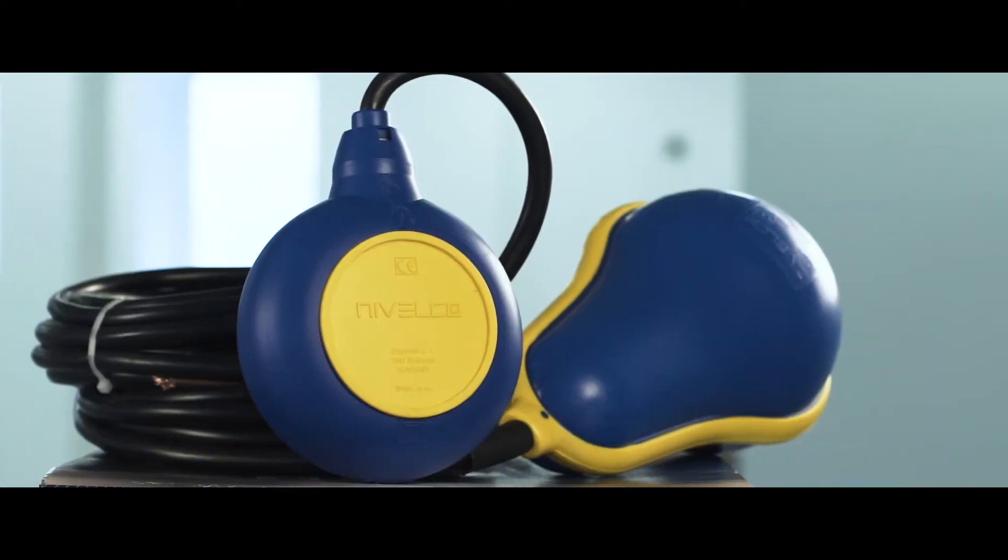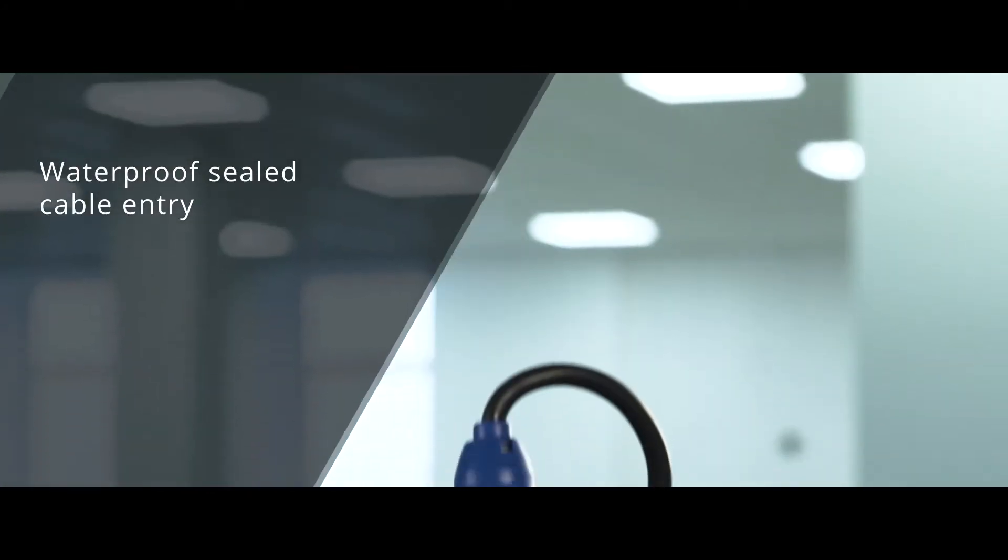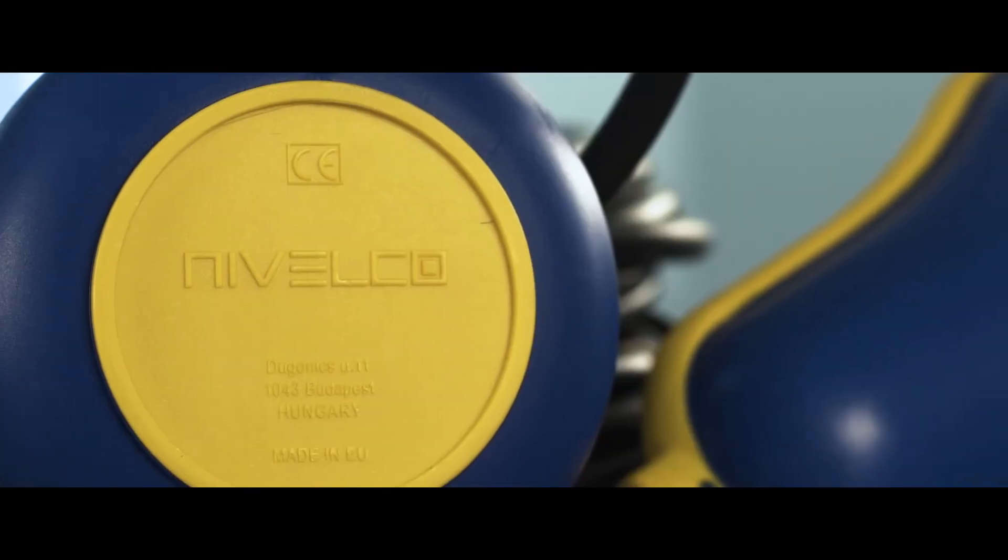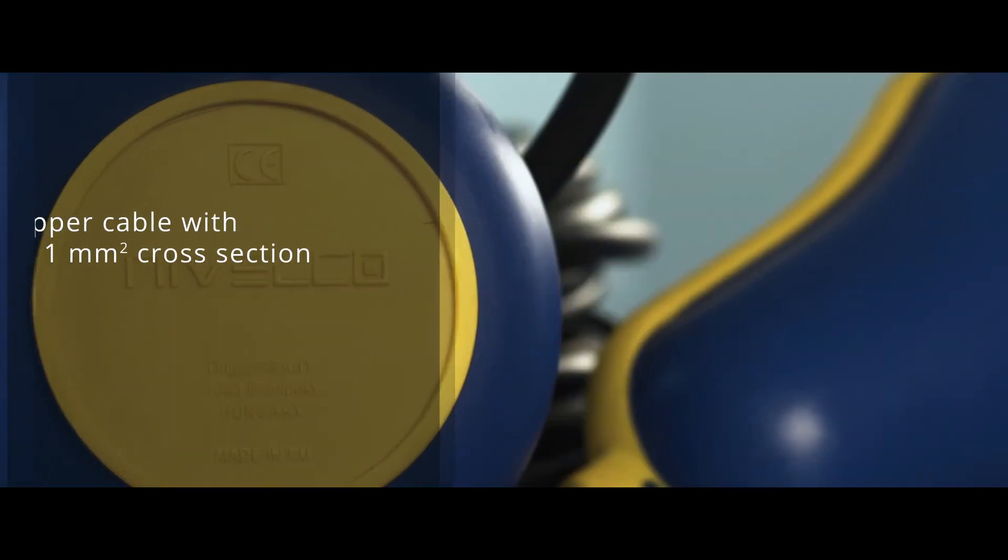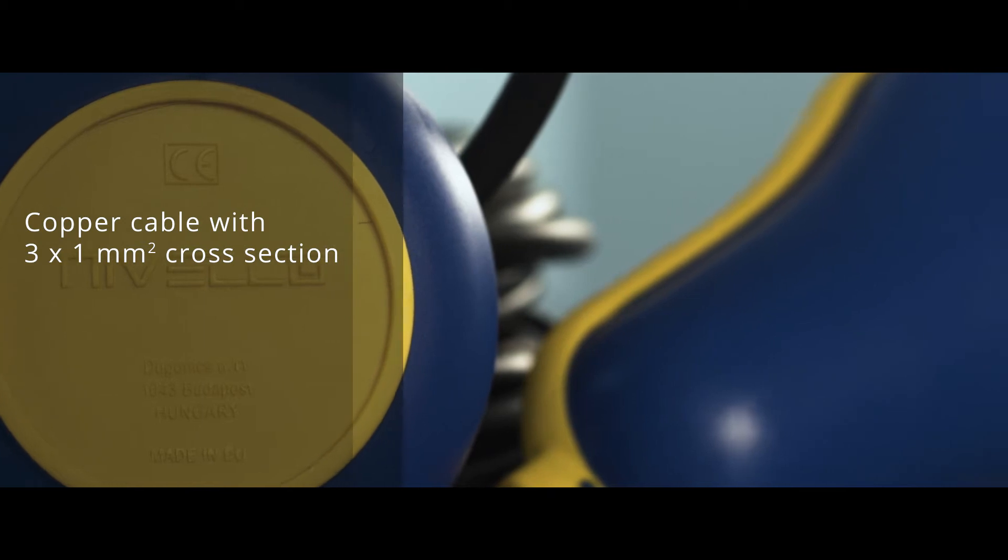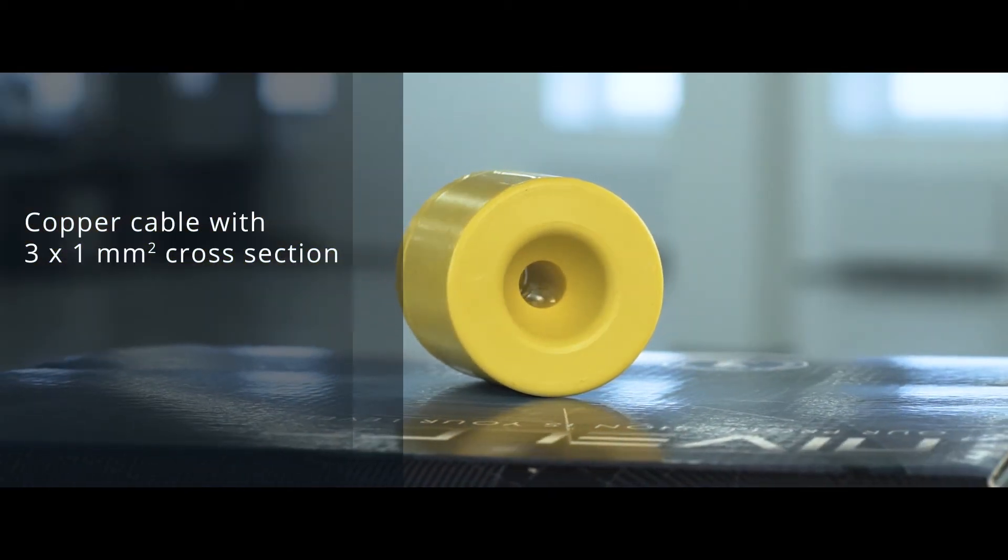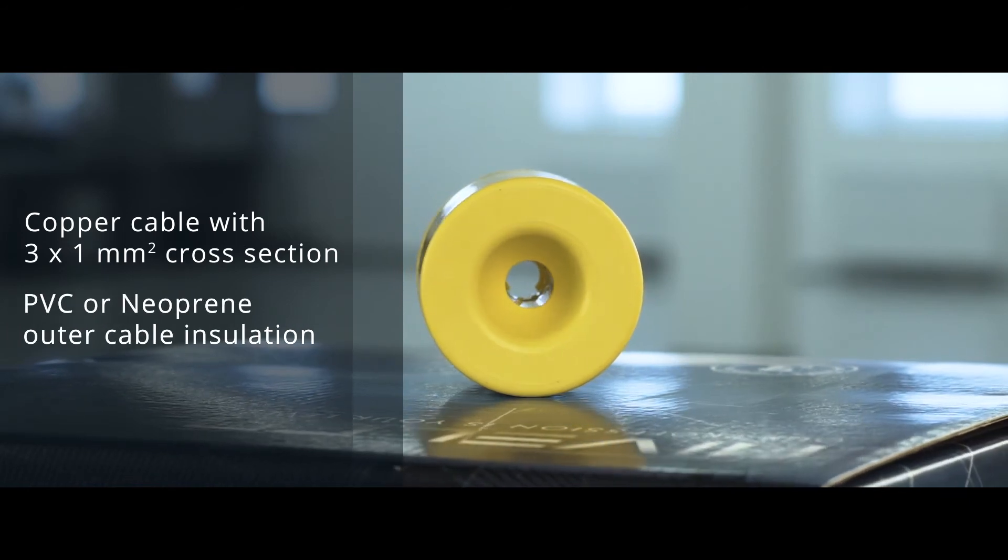The cable of the Nivel Float Level Switch is fed through a waterproof sealed entry into the monolithic structure of the injection molded plastic housing. The cable of the level switch is a flexible insulated copper cable with 3x1 mm² cross section and PVC or neoprene outer insulation.